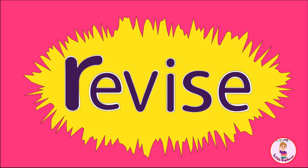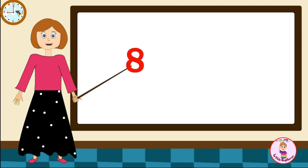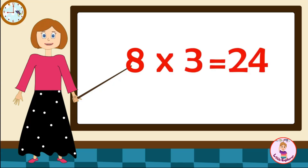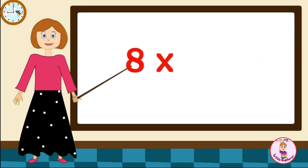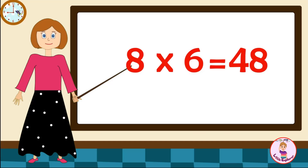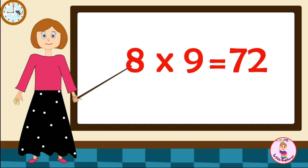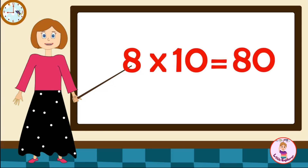Let's revise it one more time. Come on! Eight-one's are eight. Eight-two's are sixteen. Eight-three's are twenty-four. Eight-four's are thirty-two. Eight-five's are forty. Eight-six's are forty-eight. Eight-seven's are fifty-six. Eight-eight's are sixty-four. Eight-nine's are seventy-two. Eight-ten's are eighty.